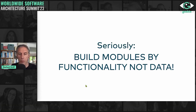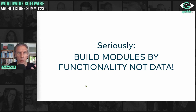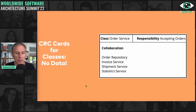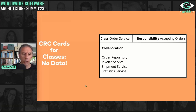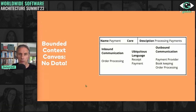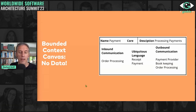This is fundamental to building systems. We want to have functionality and hide the implementation details inside those modules, such as classes and bounded contexts. An interesting thing you might notice is that the CRC card doesn't talk about data at all — there is no such thing as data on this card. The same is true for the bounded context canvas. Data is an afterthought, not what you start with.